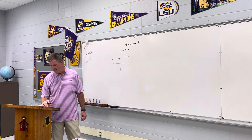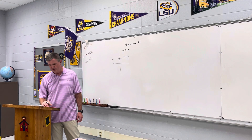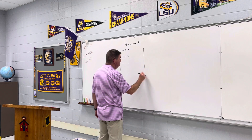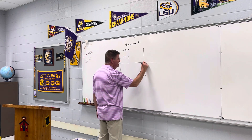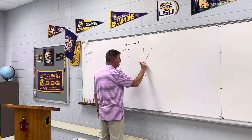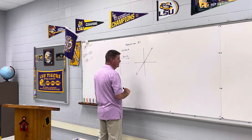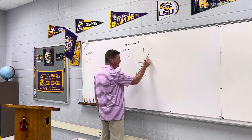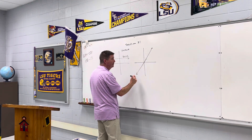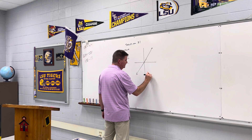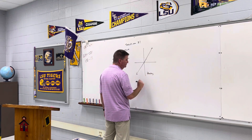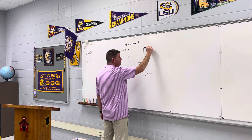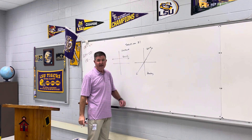That's the constant function. The second function is called the identity function. The identity function creates a 45-degree angle through the origin, and the ordered pairs are 1 comma 1, 2 comma 2, negative 5 comma negative 5. This is the identity function: f(x) = x, because both the x and y values are the same.